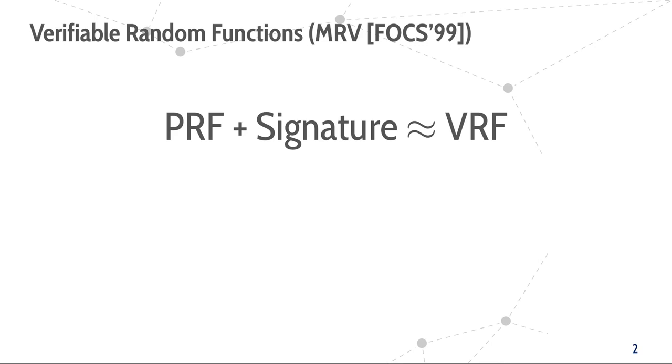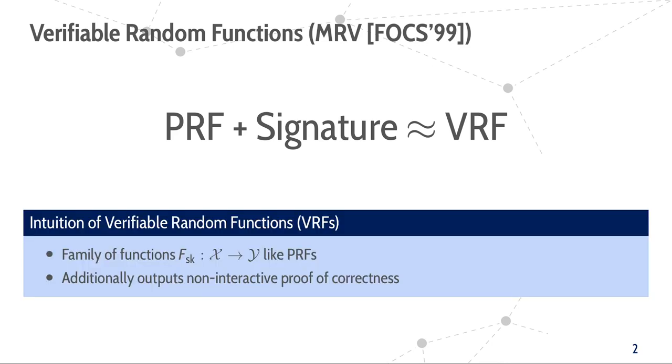Intuitively, we can think of verifiable random functions, or VRFs, as a combination of pseudorandom functions and digital signatures. That is, a VRF, just like a PRF, is a pseudorandom keyed function. However, in contrast to a PRF, a VRF when evaluated additionally produces a non-interactive proof that allows to publicly verify the correctness of the VRF output with respect to the input and the public key.